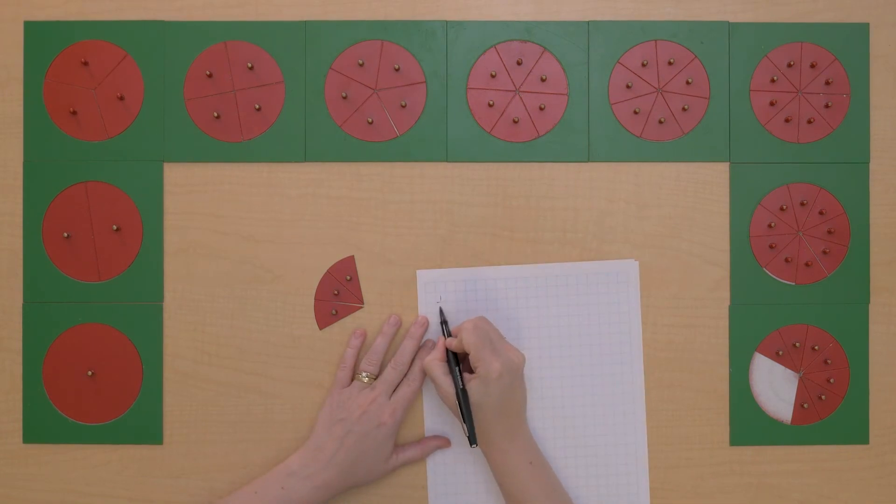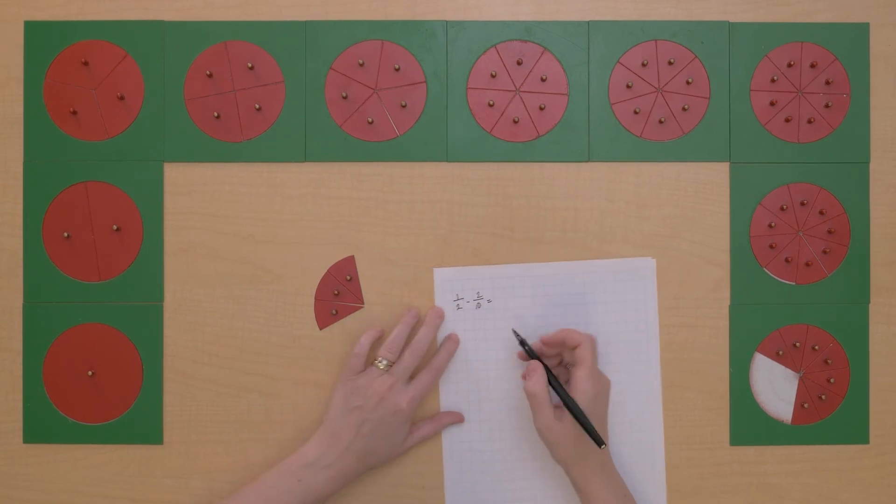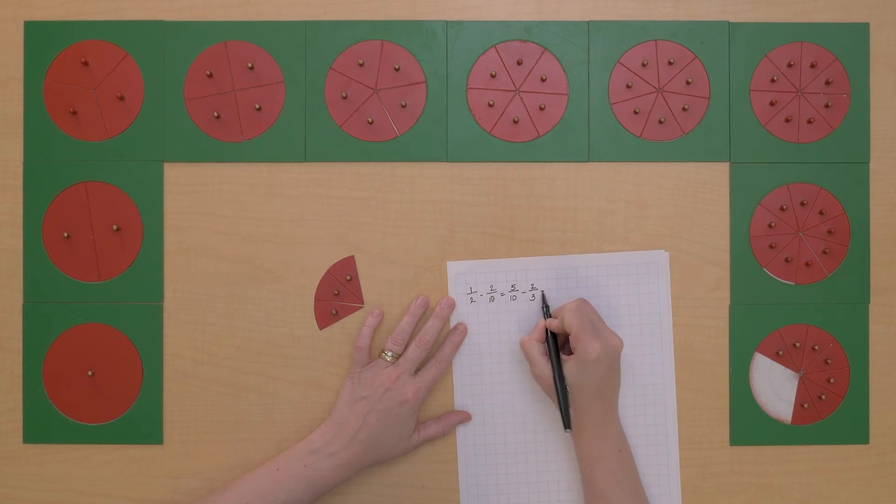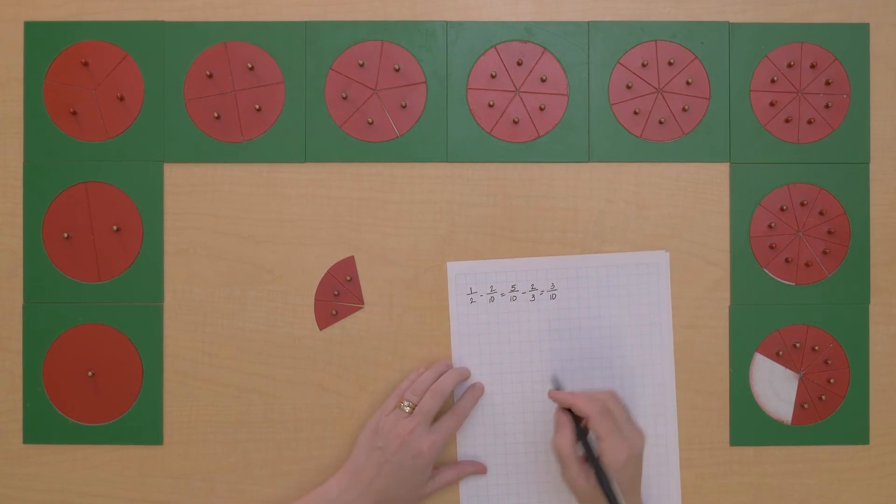We had 1 half and we wanted to subtract 2 tenths. And so we had to convert our half into an equivalent fraction so that they had the same denominator for our subtraction to get the answer 3 tenths.